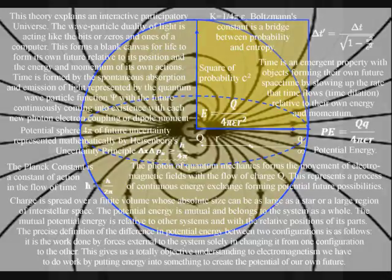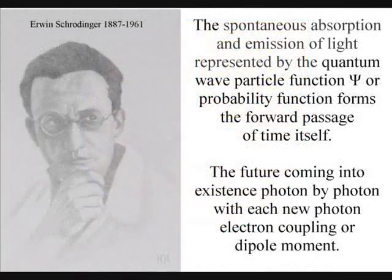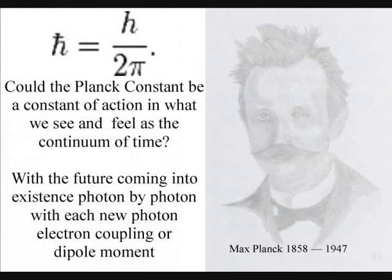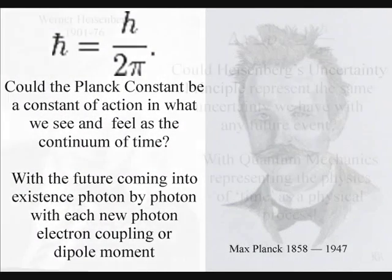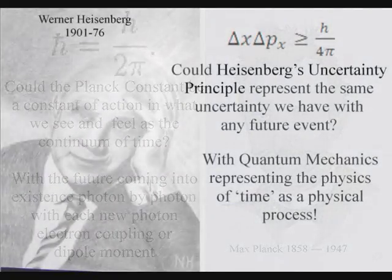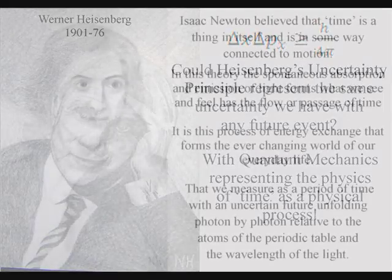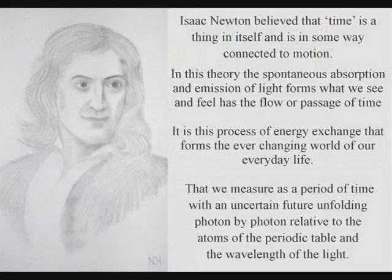In such a theory, the mathematics of quantum mechanics represents the physics of time as a physical process, with classical physics representing processes over a period of time, as in Newton's differential equations.